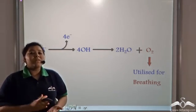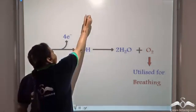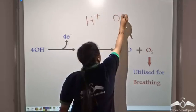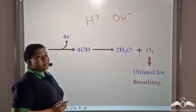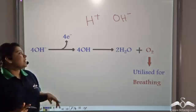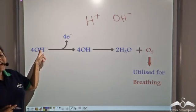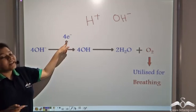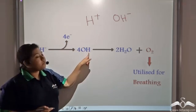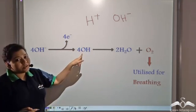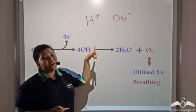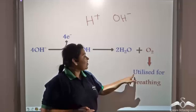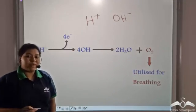Water breaks down to form hydrogen ions and hydroxyl ions. Now, four hydroxyl ions come together and with the liberation of energised electrons, they form four molecules of hydroxide, which then form two molecules of water and one molecule of oxygen.